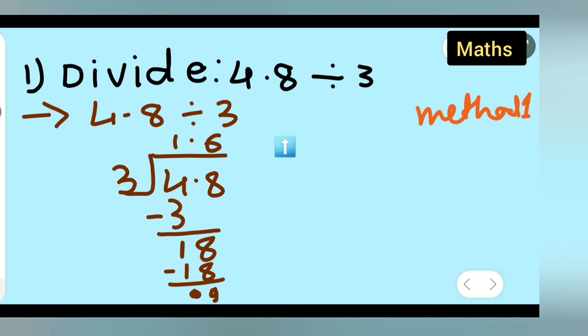Therefore, 4.8 divided by 3 gives you the answer 1.6. There is one more method where you can do this - 4.8 divided by 3, right?